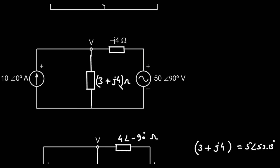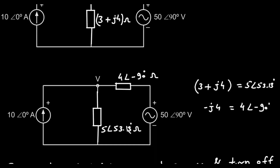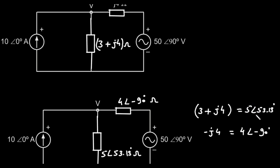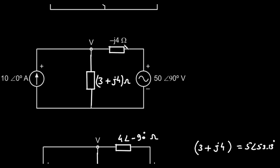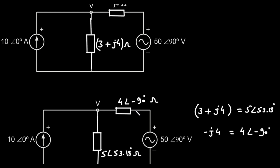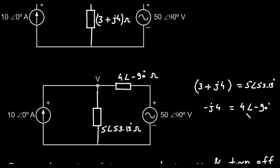The impedance 3 plus J4-ohms in rectangular form can be converted to polar form. The magnitude is the square root of 3 squared plus 4 squared, which is the square root of 9 plus 16, or the square root of 25, which is 5. The angle is the inverse tangent of 4 divided by 3, which is 53.13 degrees. So 3 plus J4-ohms is equal to 5 at an angle of 53.13 degrees ohms. The capacitor's impedance is negative J4-ohms. In polar form, the magnitude is 4 and the angle for a negative imaginary number is negative 90 degrees. So negative J4-ohms is equal to 4 at an angle of negative 90 degrees ohms. Our simplified circuit now has the current source, the voltage source, and two parallel impedances: 5 at an angle of 53.13 degrees ohms, and 4 at an angle of negative 90 degrees ohms.